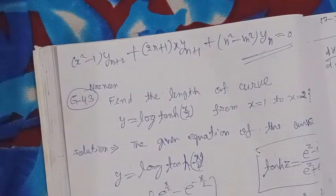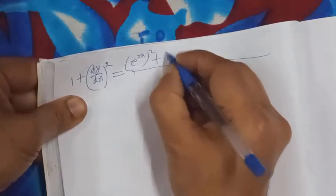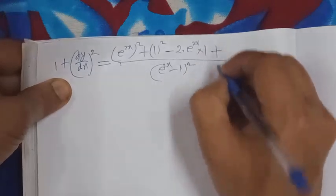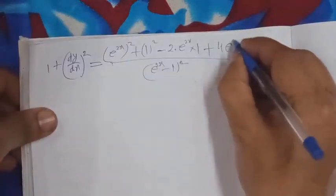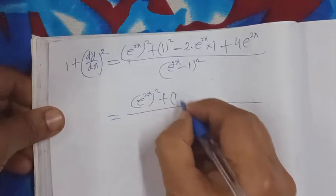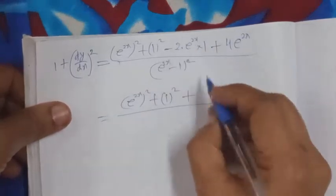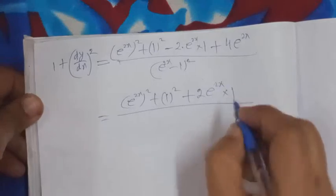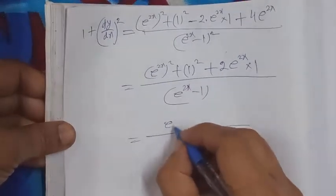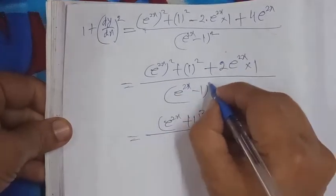Opening the (e^(2x) − 1)² bracket: first quantity e^(2x) squared gives e^(4x), second quantity 1² = 1, minus 2 times e^(2x). Adding 1 in the numerator from the '1+' term gives e^(4x) + 2e^(2x) + 1 in the numerator, and (e^(2x) − 1)² in the denominator. This simplifies as (e^(2x) + 1)² / (e^(2x) − 1)².